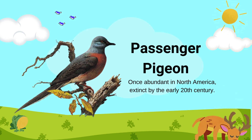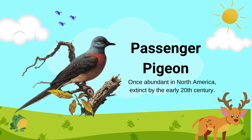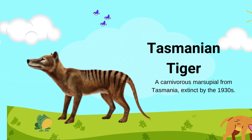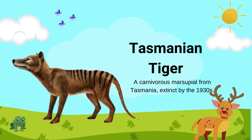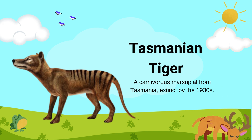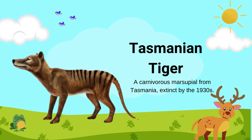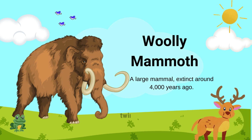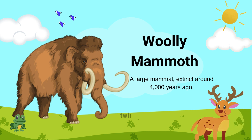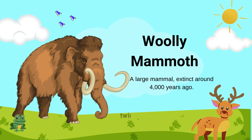Tasmanian tiger: a carnivorous marsupial from Tasmania, extinct by the 1930s. Woolly mammoth: a large mammal, extinct around 4,000 years ago.